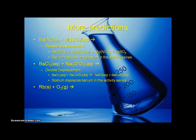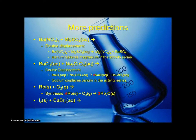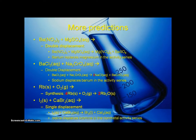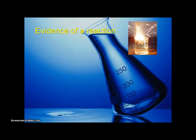Rubidium and oxygen — assuming the reaction proceeds — has no choice but to be a synthesis, and here's the balanced equation. Iodine and calcium bromide is a single displacement, where iodine displaces bromine since iodine is higher in the activity series than bromine.